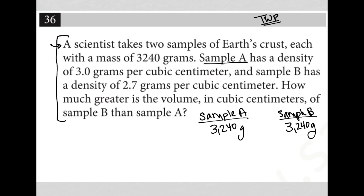Sample A has a density of three grams per cubic centimeter. So we have three grams per cubic centimeter for the density of sample A. And sample B has a density of 2.7 grams per cubic centimeter. So this one is 2.7 grams per cubic centimeter.